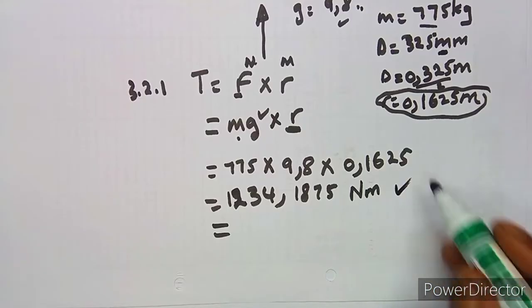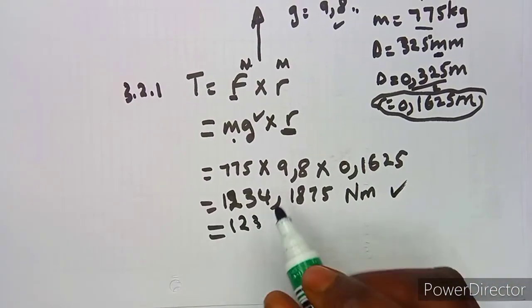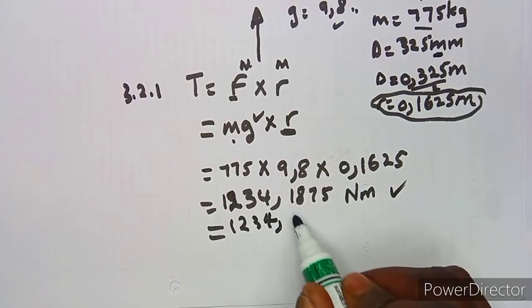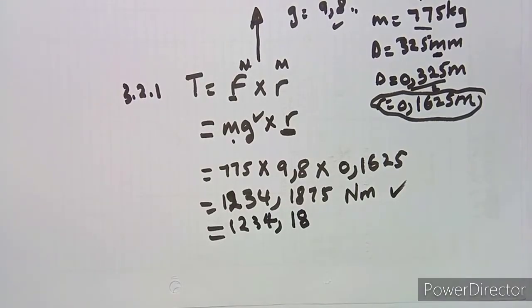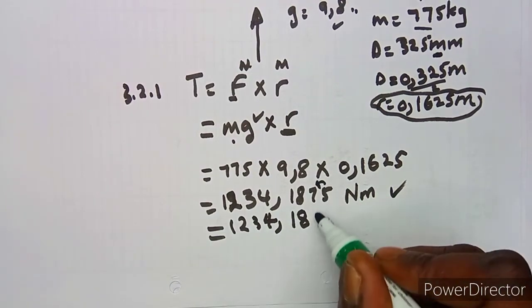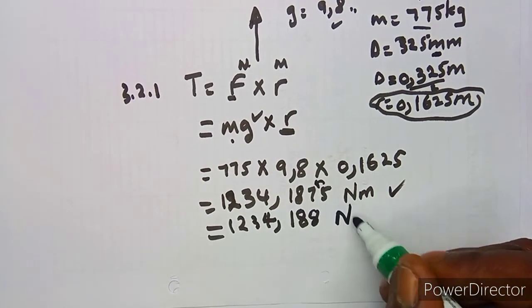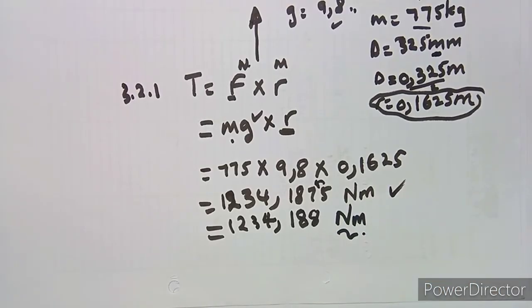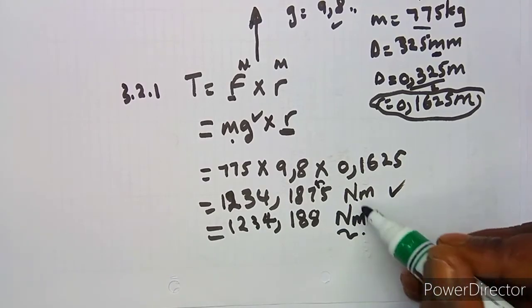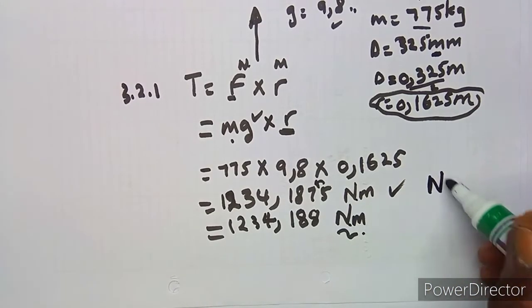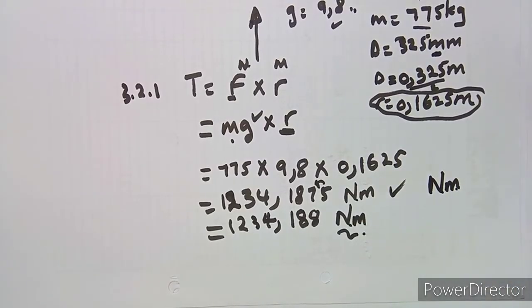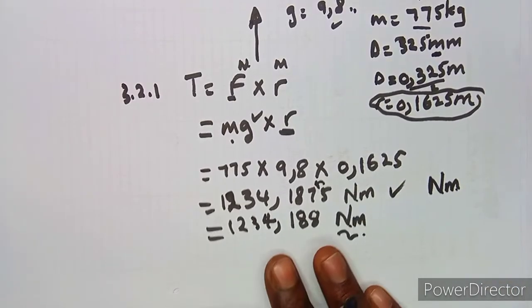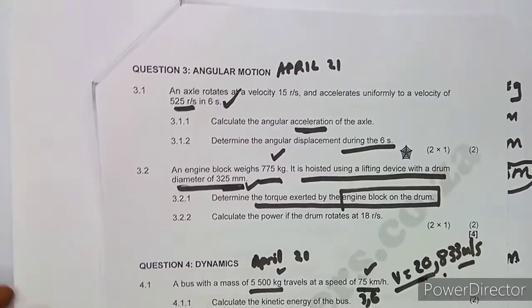Rounding off to three decimal places, the answer is 1234.188 N·m. Remember, torque is measured in newton metres. You can write it as N·m or newton metre — one and the same thing.